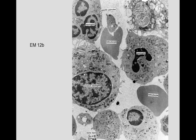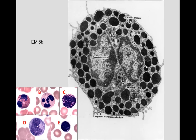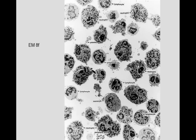Another electron micrograph shows a neutrophil developing near a nurse cell. We can see the dumbbell-shaped specific granules. An immature neutrophil starts with an oval nucleus that becomes lobulated as it matures. In contrast, the basophil has large blue granules without a crystalline core.